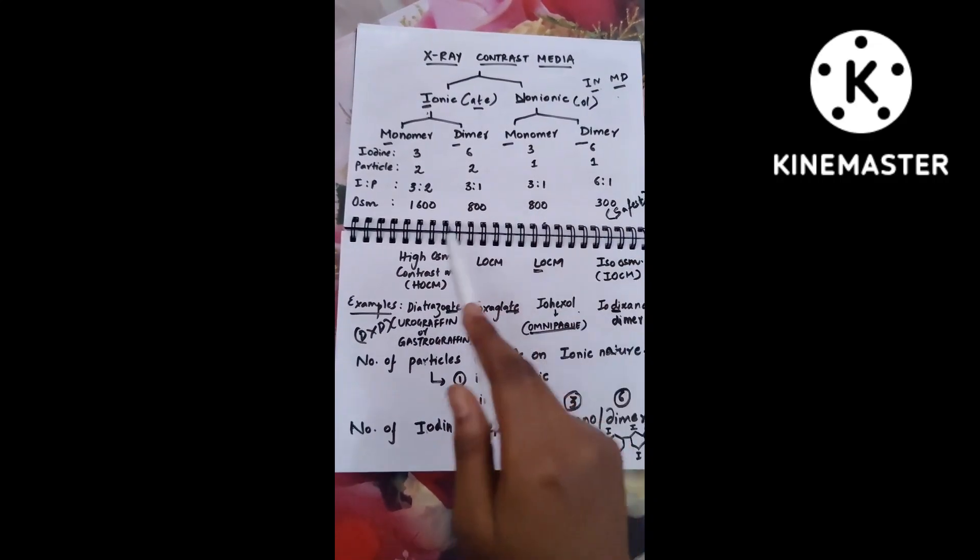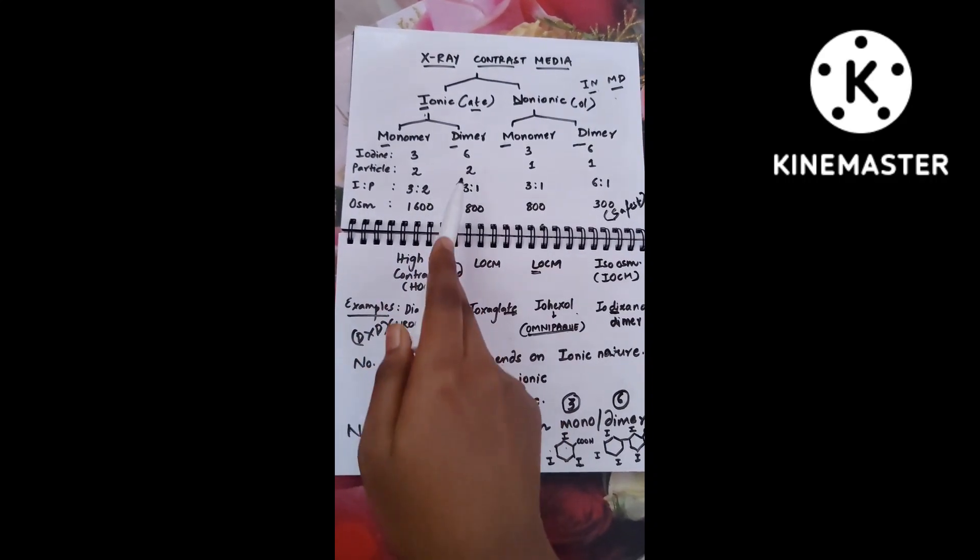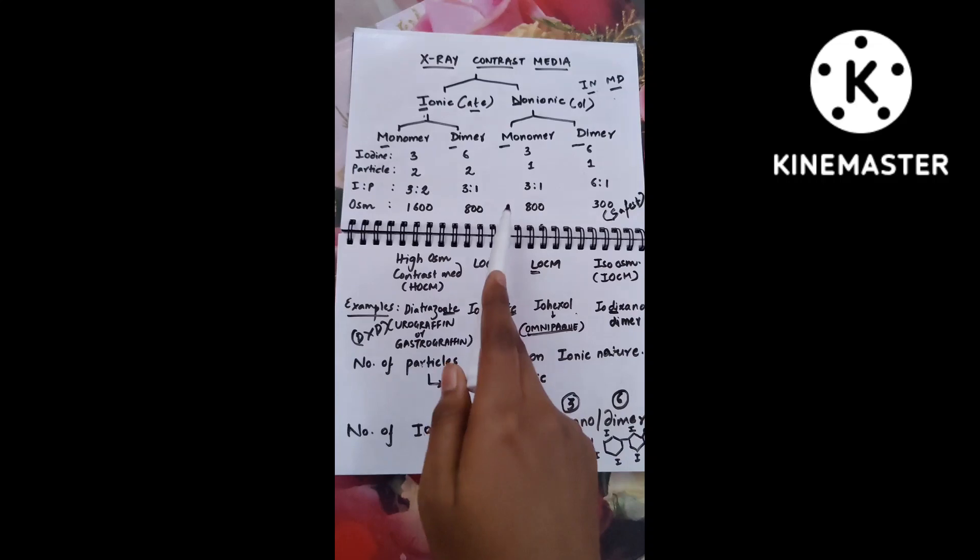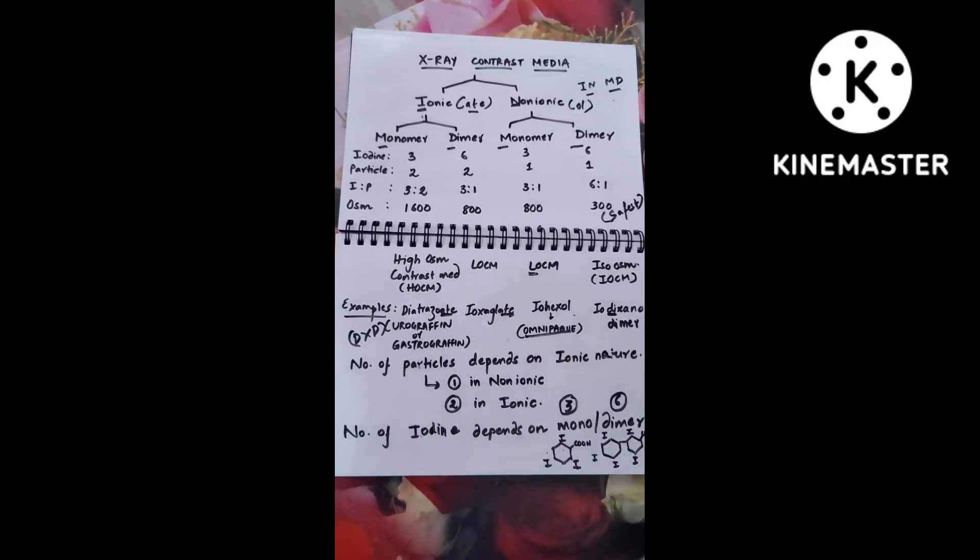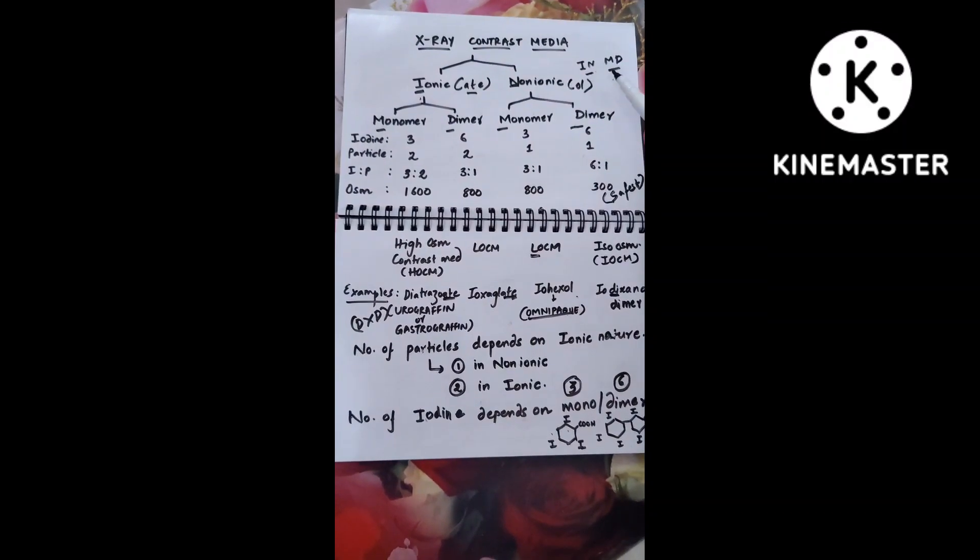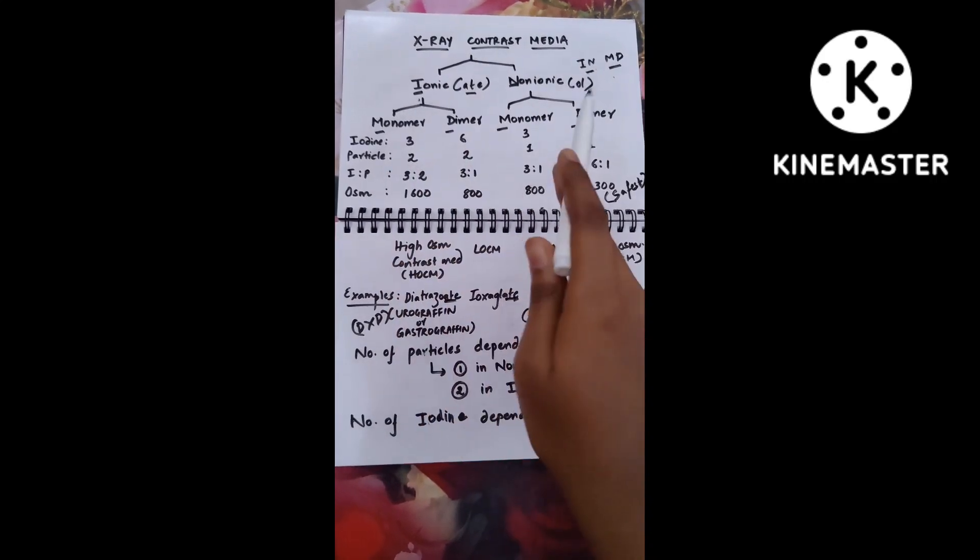Now derive the ratio: iodine is to particle, three is to two, six is to two is nothing but three is to one. You need to remember the ratio in the same order. In the exam, visualize this chart: ionic, non-ionic, then split into MD.